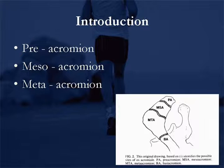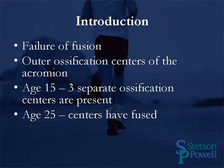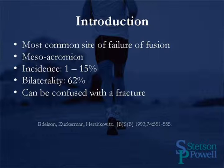The acromial apophysis develops from four separate centers of ossification, including the basiacromium, metaacromium, mesiacromium, and preacromium. The type of os acromiale are defined by the unfused segment immediately anterior to the site of nonunion. There can be a failure of fusion of these ossification centers, including the outer ossification centers of the acromium. Failure of fusion can occur at many different stages. At age 15, the three separate ossification centers are present, but usually by age 25, all the centers have fused.